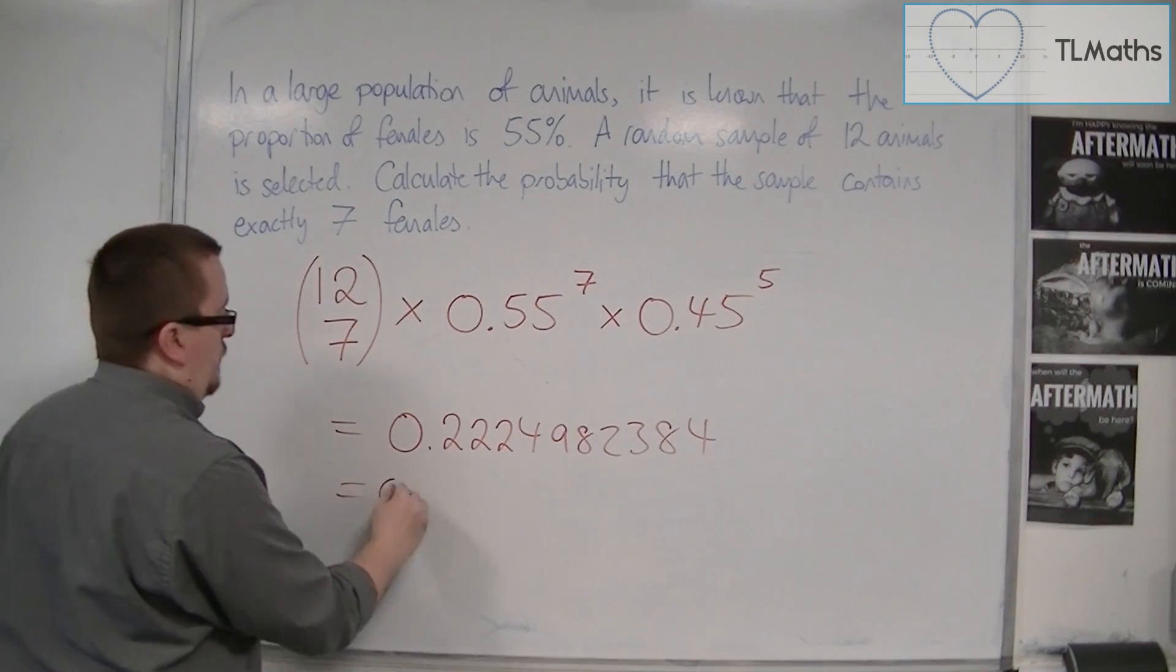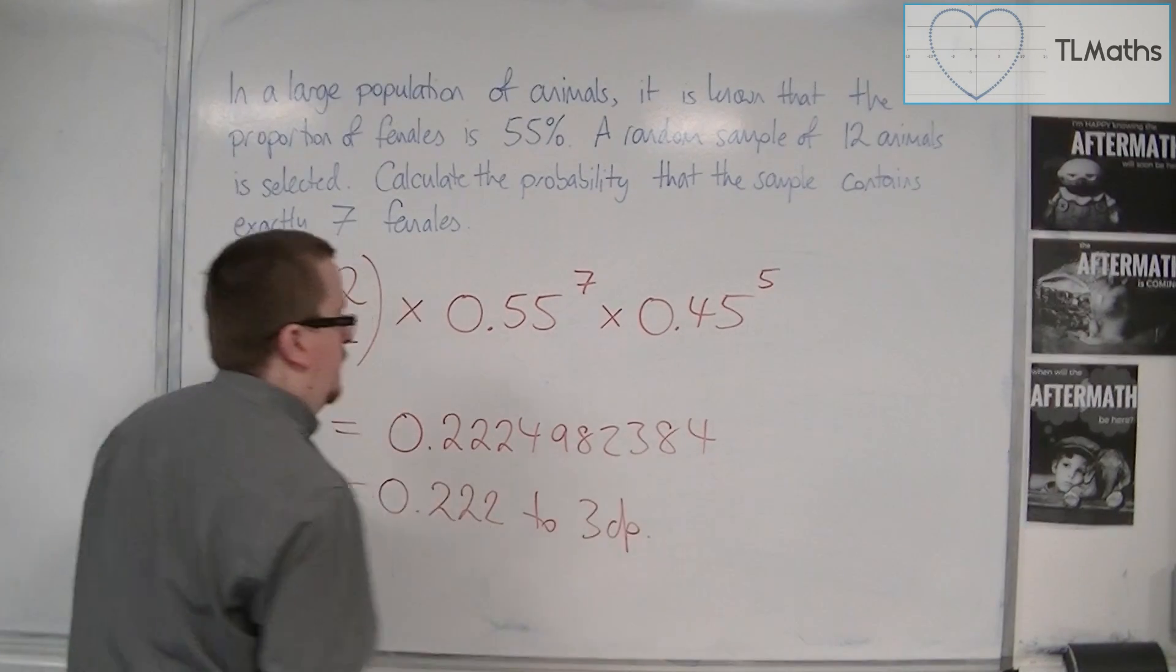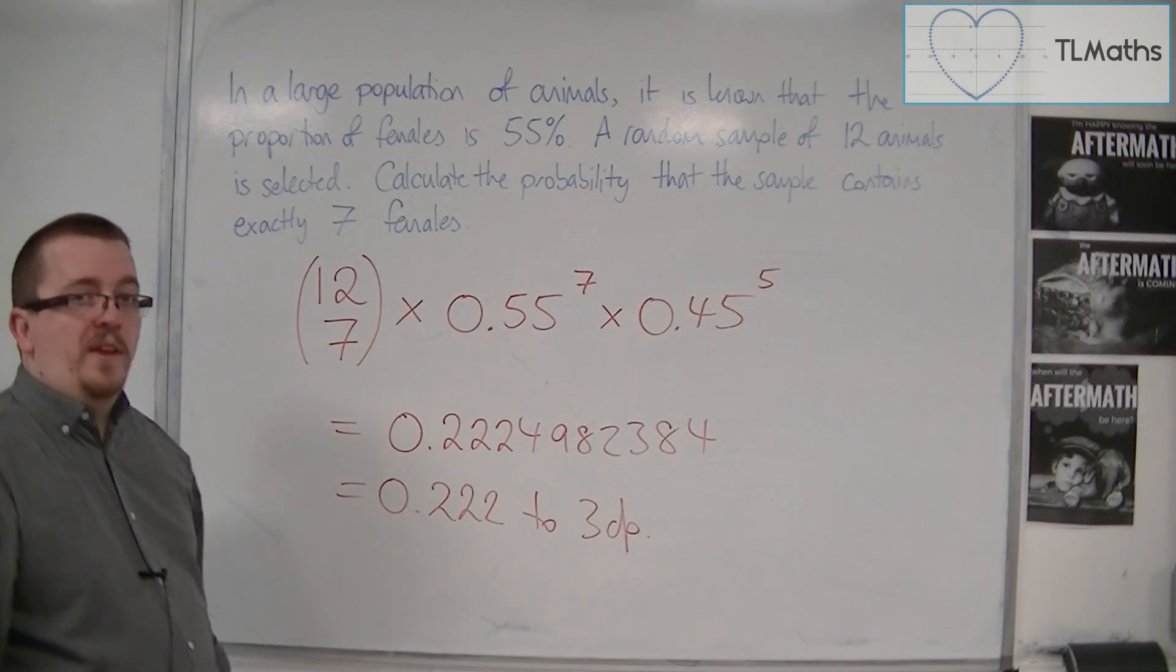So it's good enough to round that to 3 decimal places. Okay? And that is the probability. So just over 22%.